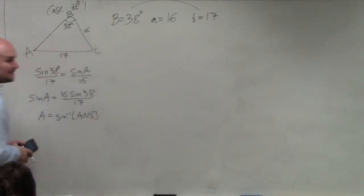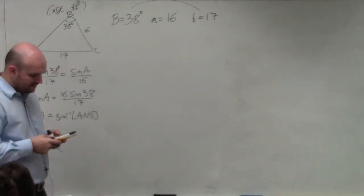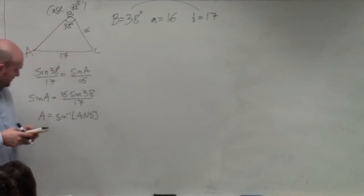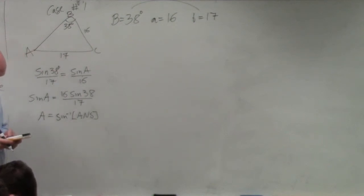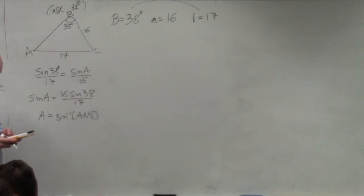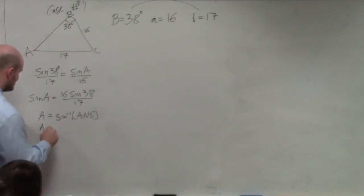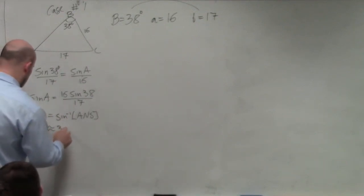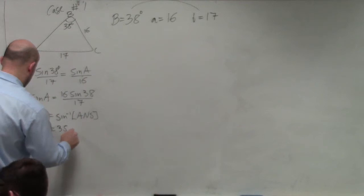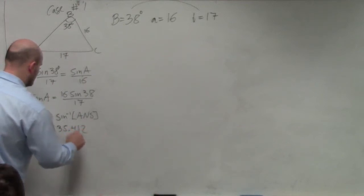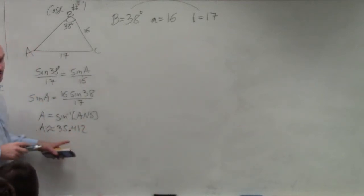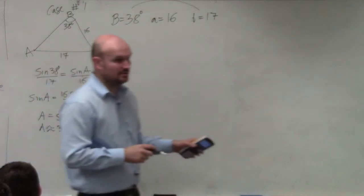So I can say the sine of A is equal to 16 times the sine of 38, all over 17. You could type it in separately or all together. I'm going to do sine inverse — 16 times sine of 38, divided by 17 — and I get A is approximately 35.412, rounding to the nearest hundredth.